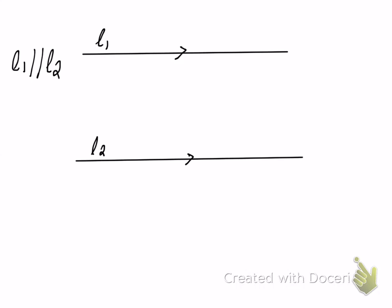The reason being that if I stretch the two lines, they won't meet. Let's draw a line that cuts through both of these lines. If you notice, this line makes an angle — let's call it A — the angle that it makes with line 1. The angle alternate to this angle that line 2 makes with the same line, let's call it B. Now these two angles will be equal. A will be equal to B.